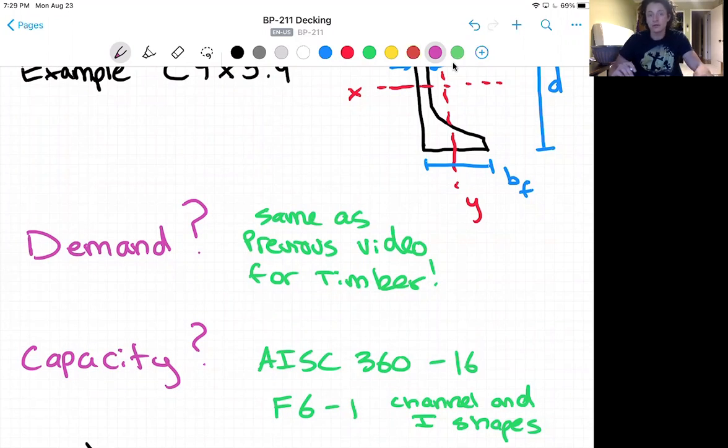This is a point where you would reflect on if you're using a different beam you navigate to a different section for that beam to find the capacity equation.